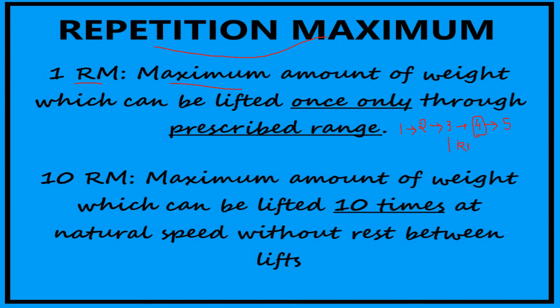I hope you understand this concept of 1RM. Now similarly, what is 10RM? It is the maximum amount of weight which can be lifted 10 times at natural speed without rest between the lifts. So if my 1RM is 4kg, would my 10RM also be 4kg? It might be or it might not be — it might be less than that. So 1RM may or may not be equal to 10RM; it might be less than that.